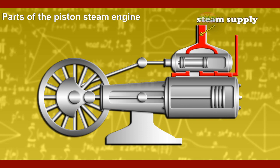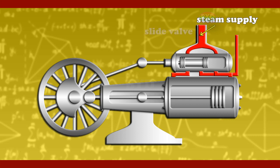Steam supply: steam comes from the boiler. This pressurized steam is then flowed through the engine piston to produce mechanical work. Slide valve: this valve is installed in the steam chest. Its function is to flow steam to the cylinder. The sliding valve also removes steam from the cylinder at the right time.